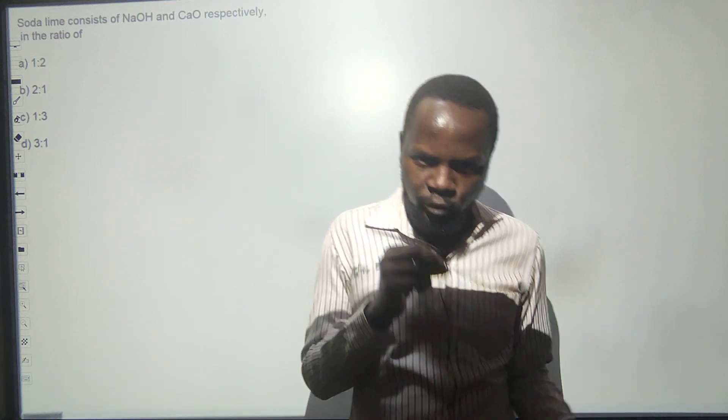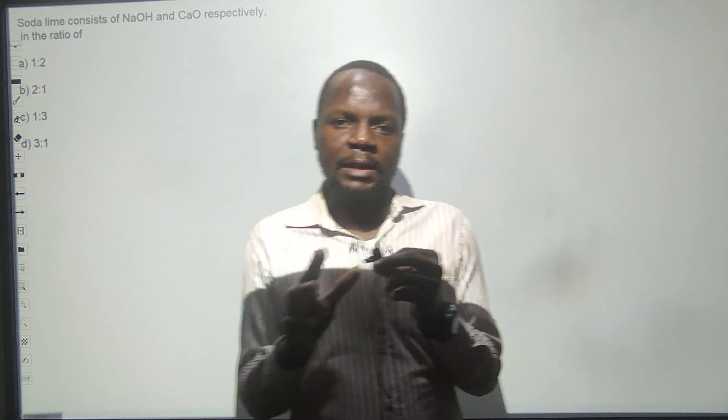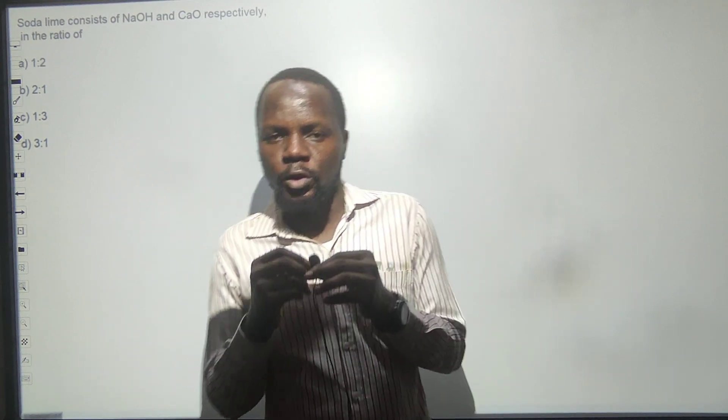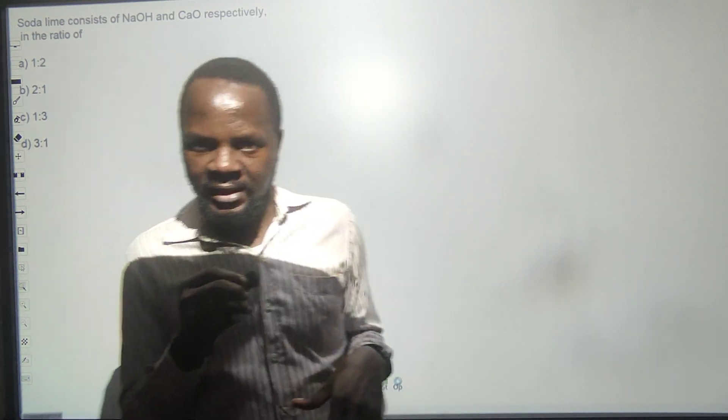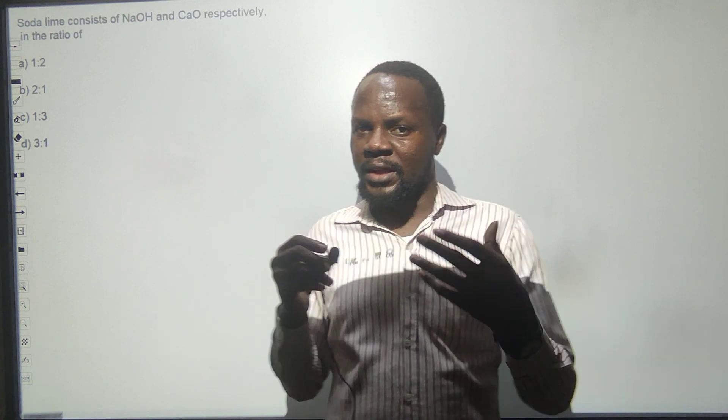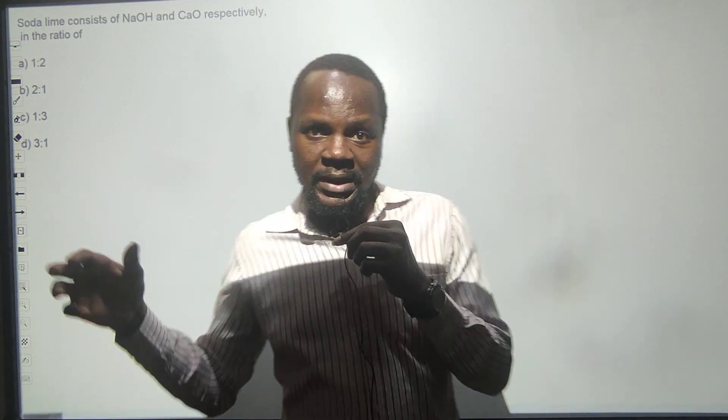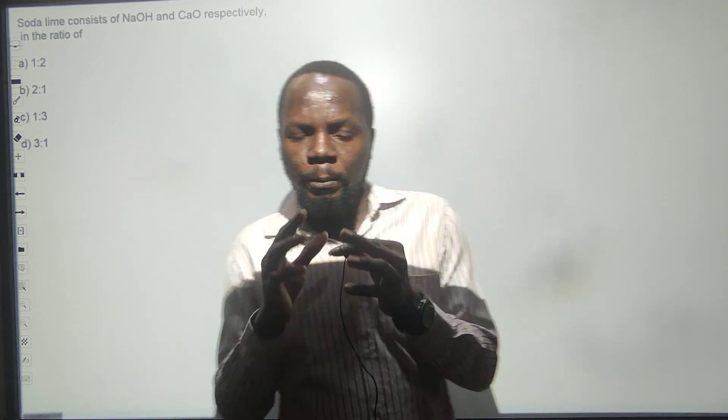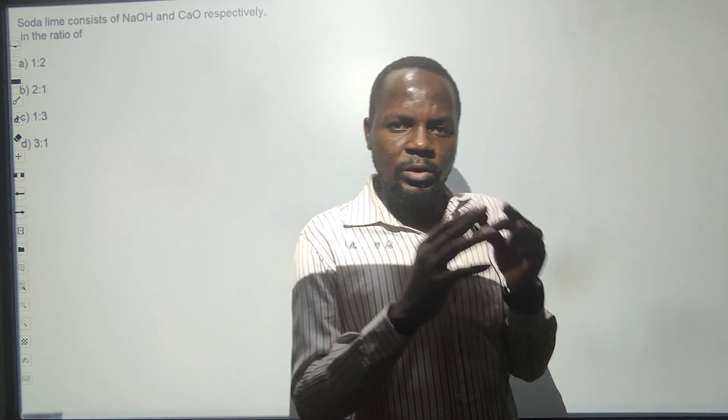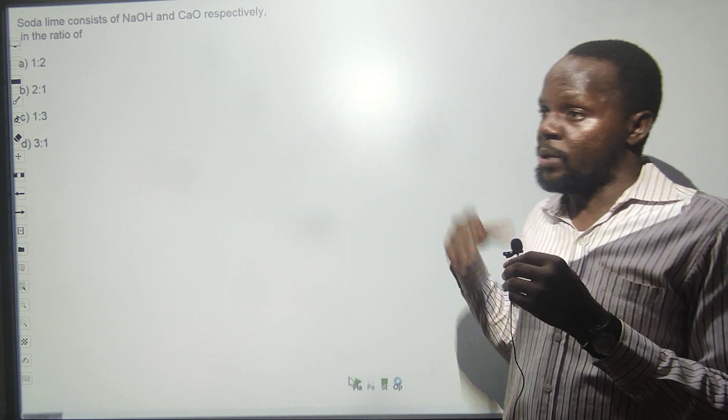Soda lime is a mixture of sodium hydroxide and calcium oxide. Alkane is prepared from soda lime mixed with sodium ethanoate. Sodium ethanoate plus soda lime will give you methane. This soda lime contains two compounds mixed together: calcium oxide (called quicklime) and sodium hydroxide. The proportion of soda lime is always in the ratio of 1 to 3.